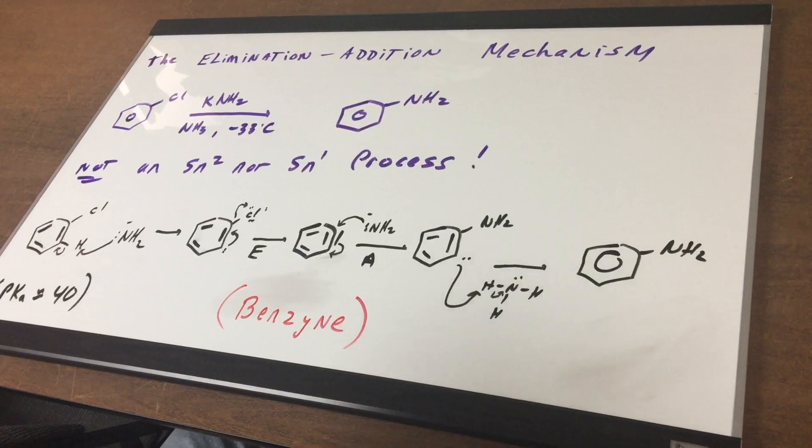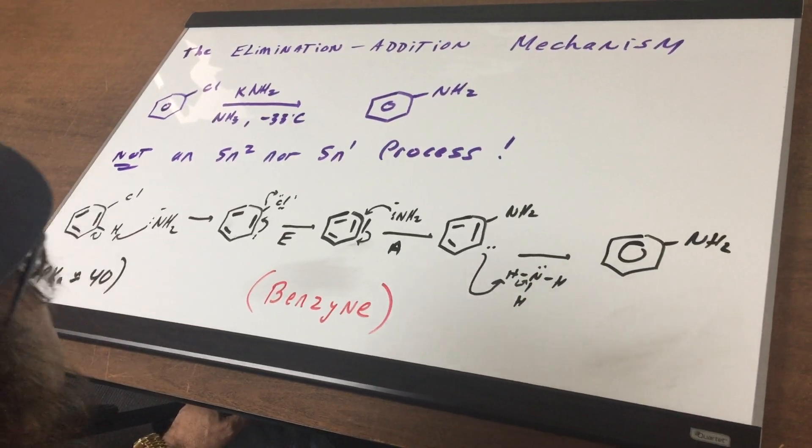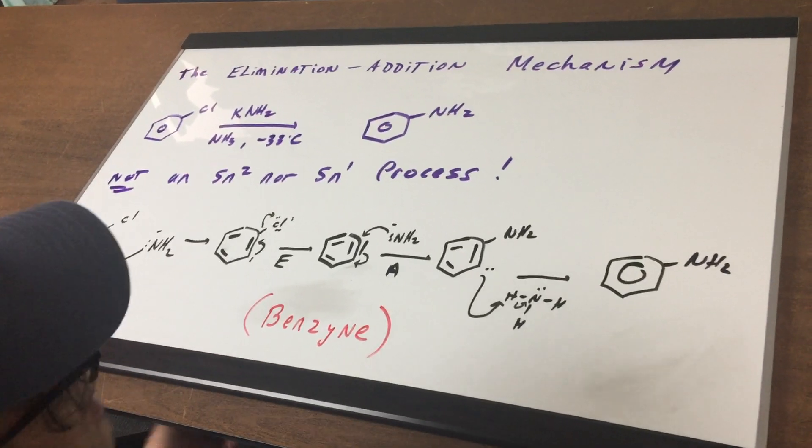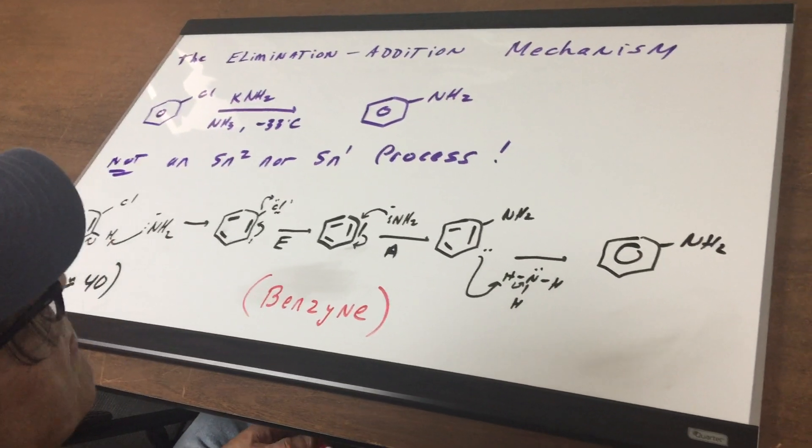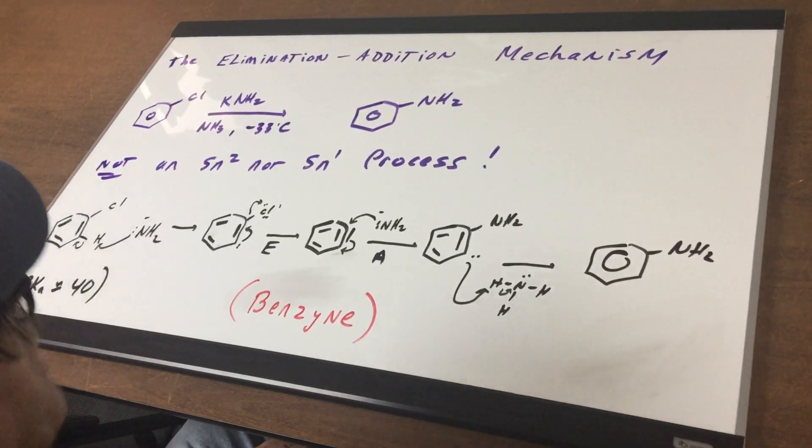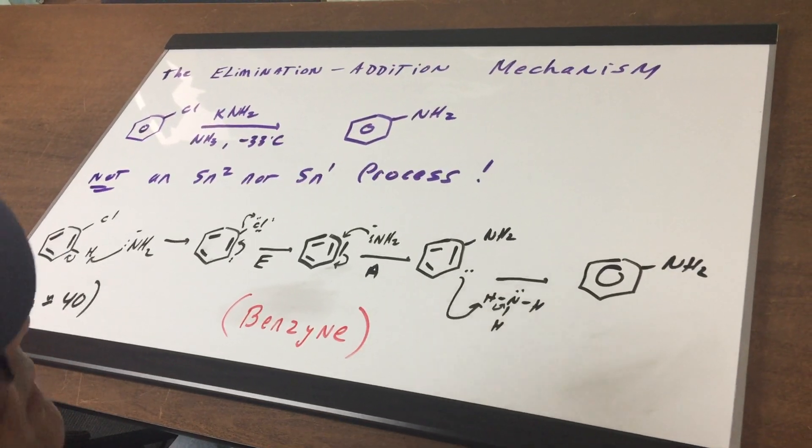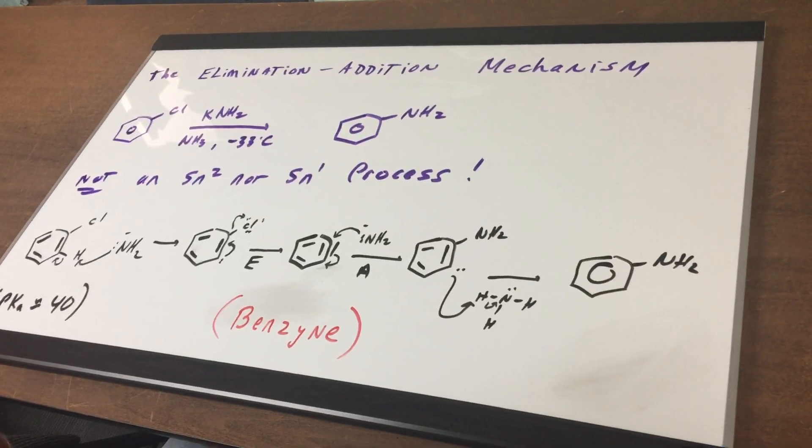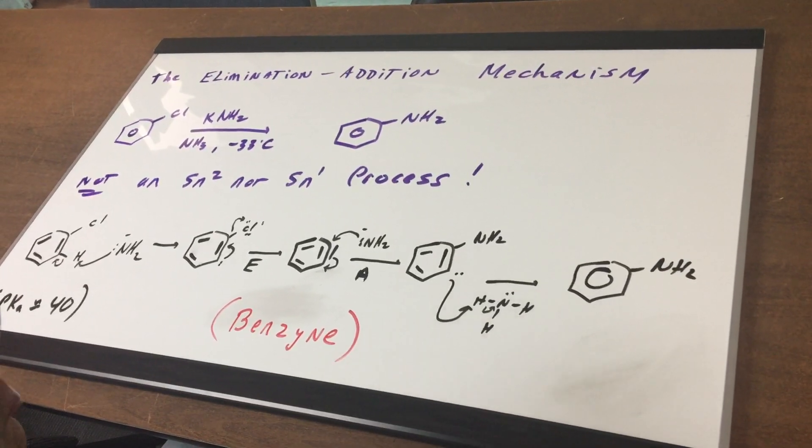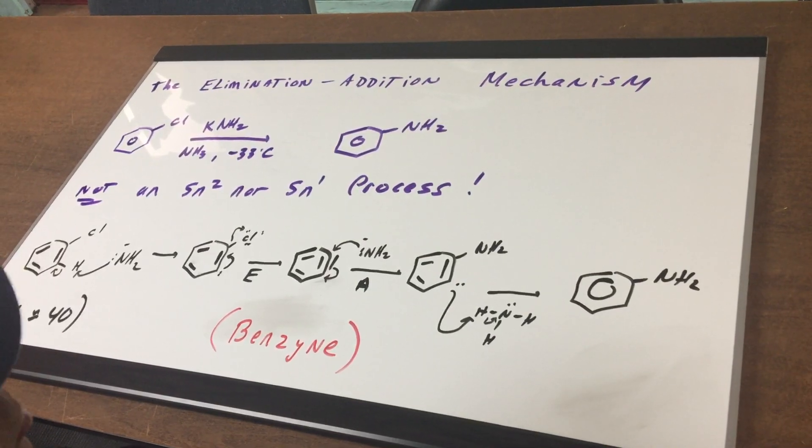And if you remembered, an aryl halide is very unreactive. It does not do an SN2 nor does it do an SN1 process. But that doesn't mean it's totally inert. If you ever see a base such as NaNH2 or KNH2, you want to be alerted that this is a very, very strong base. It's such a strong base, it can actually deprotonate the hydrogen off a benzene ring.